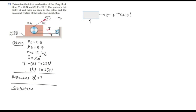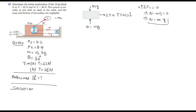The normal force N equals mg because this surface is horizontal. Summing vertical forces: N minus mg equals zero, so the normal force equals mass times gravity. With a mass of 15 kg and g of 9.81 m/s², the normal force is 15 × 9.81 = 147.15 newton.